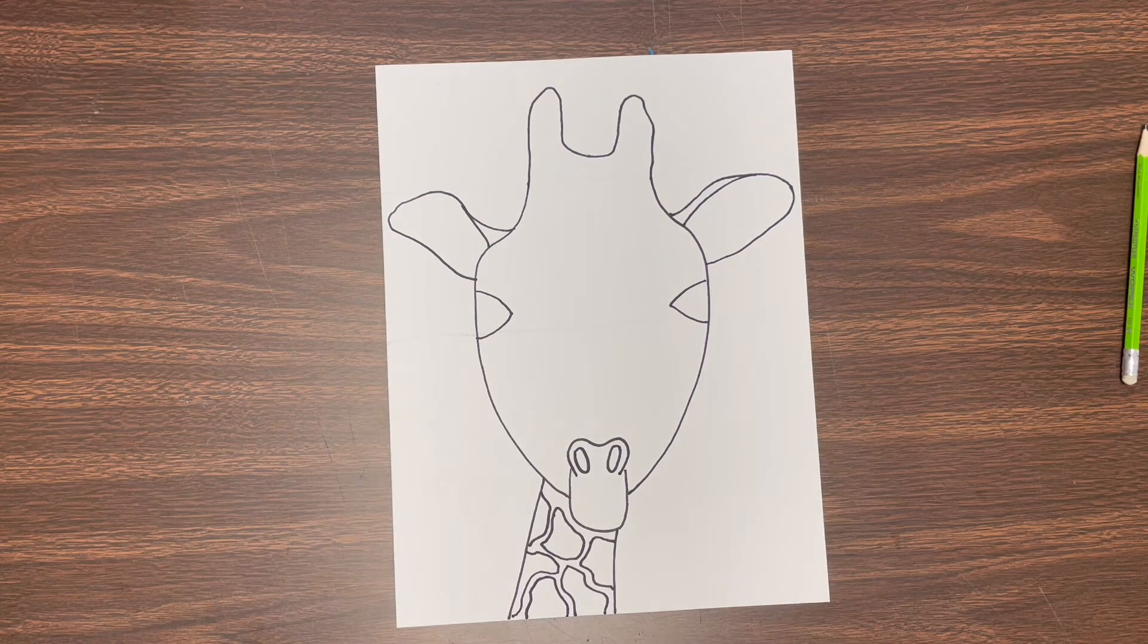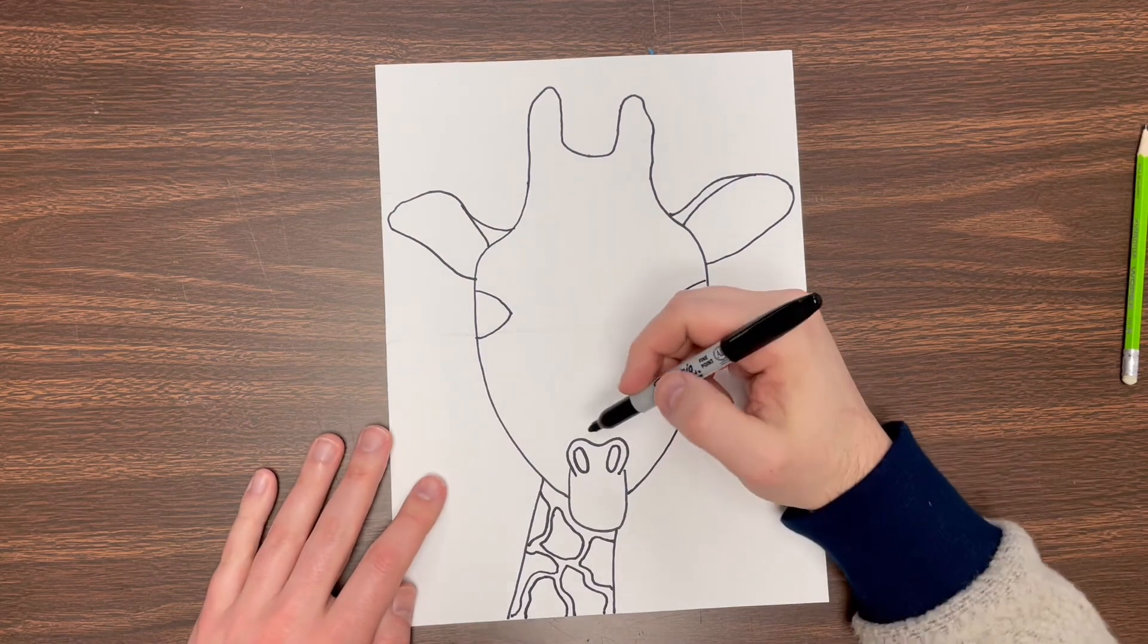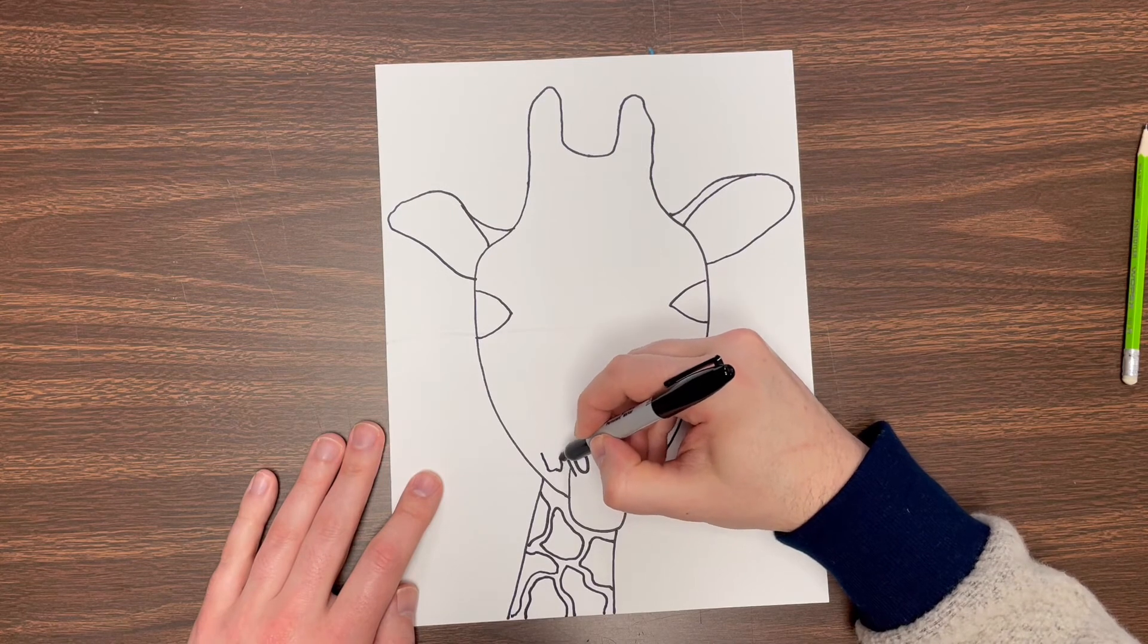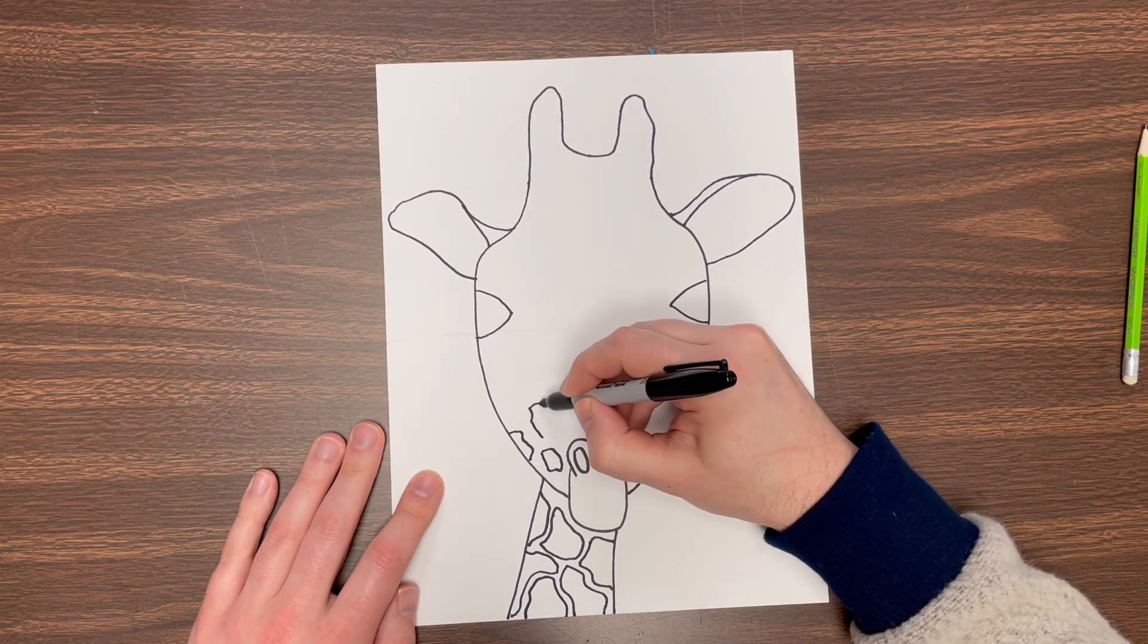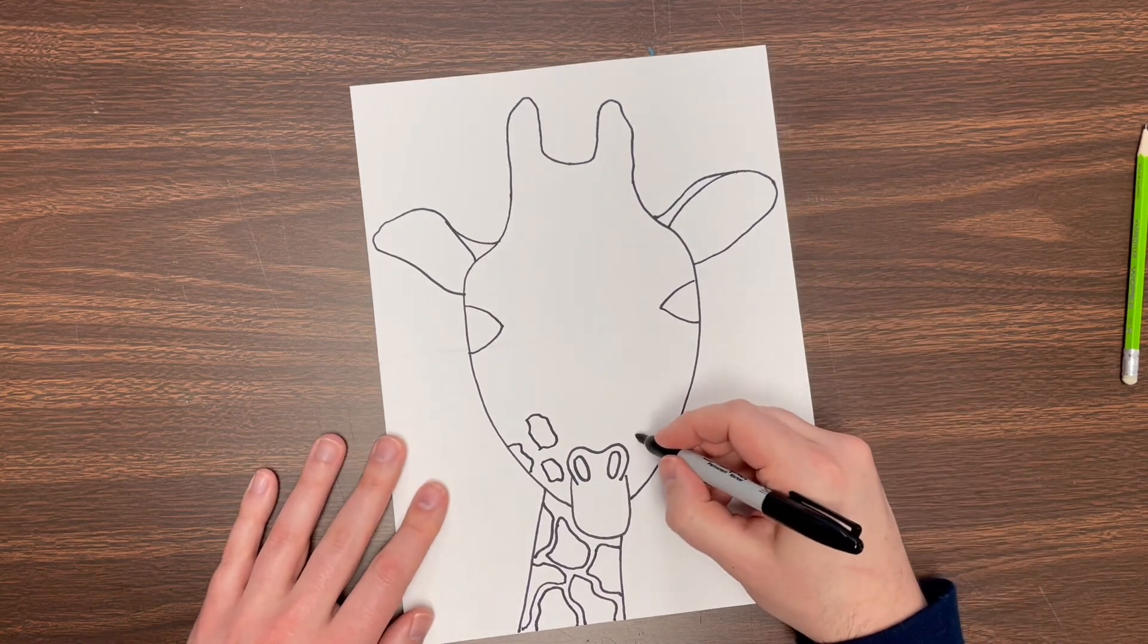You can make those off to the sides there. You can even make some that kind of come up onto the face, although there probably will only be a few. The spots are generally only on their necks and bodies.